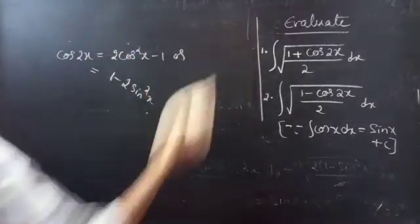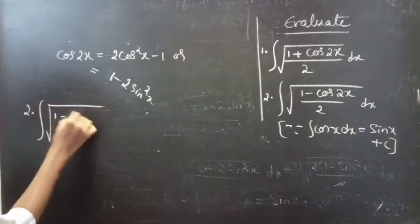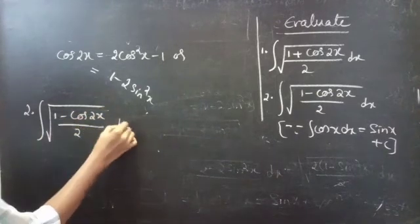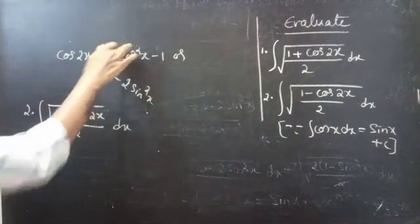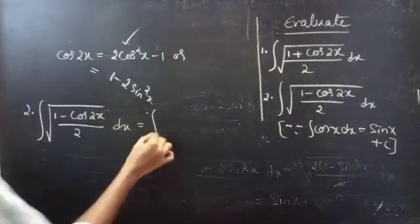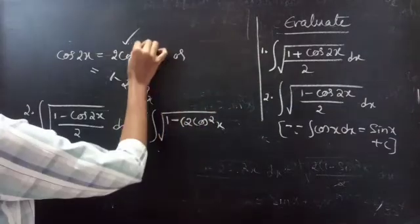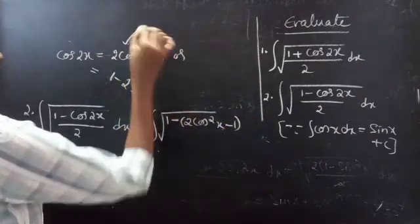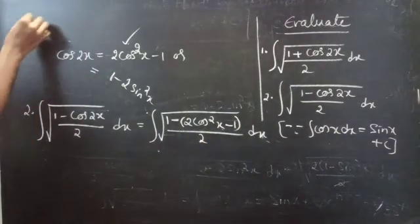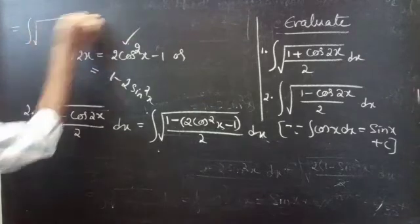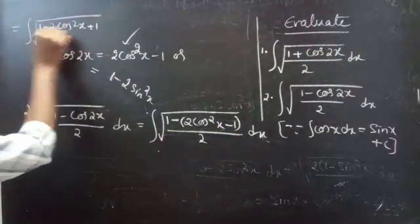Now coming to the second problem. We have the integral of square root of (1 minus cos 2x) divided by 2, dx. Here also we can use these two formulas. Let's try the first one, where cos 2x equals 2cos²x minus 1. So this equals the integral of square root of (1 minus (2cos²x minus 1)) divided by 2, dx.